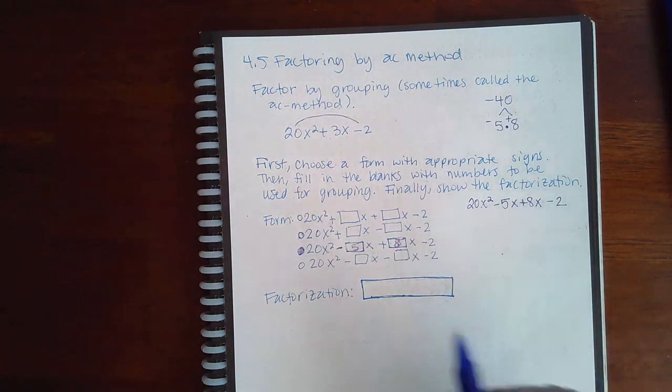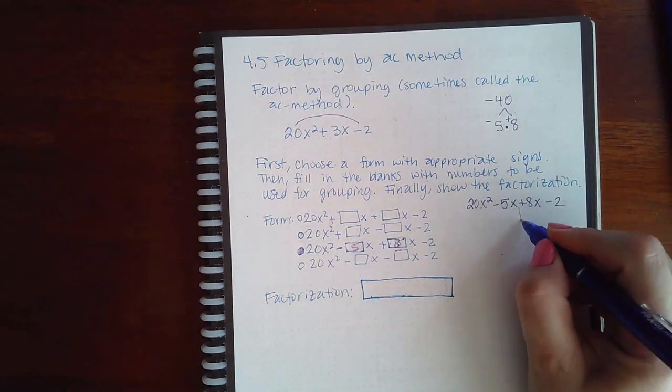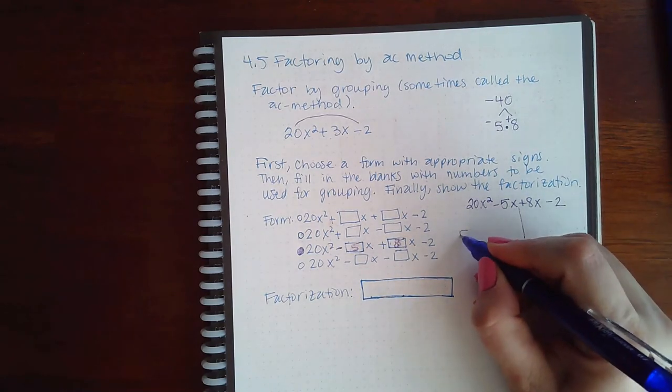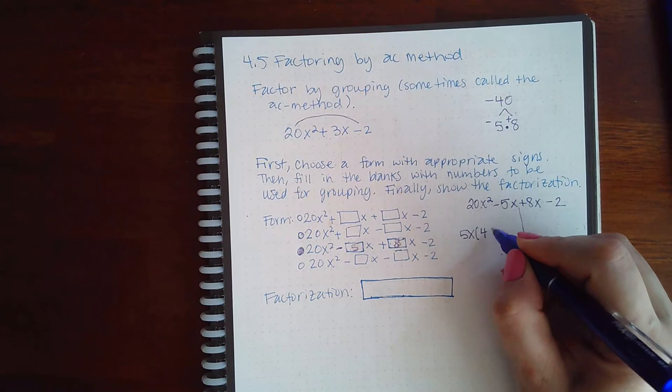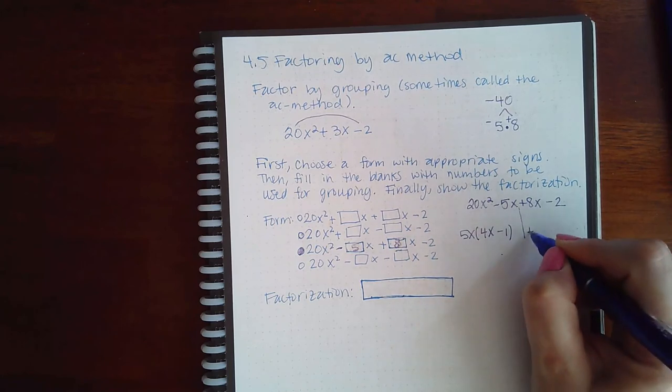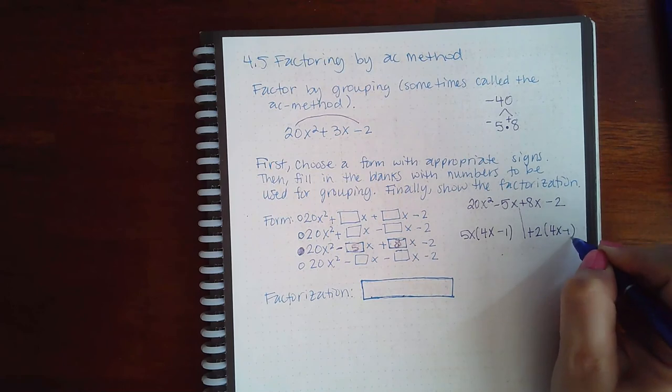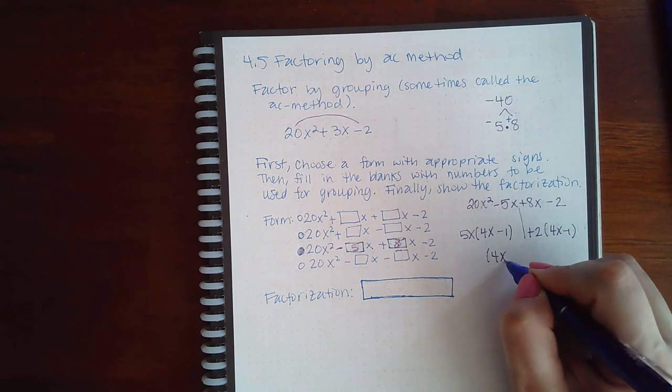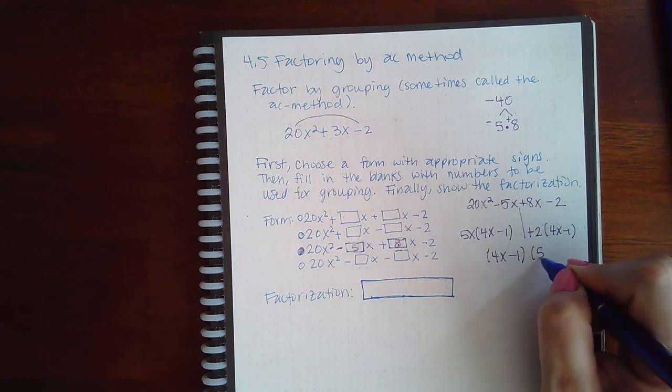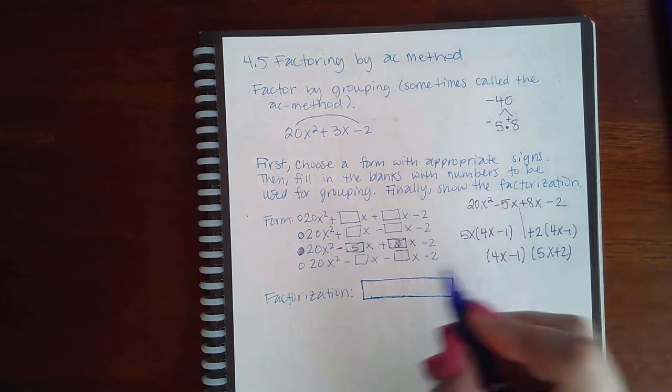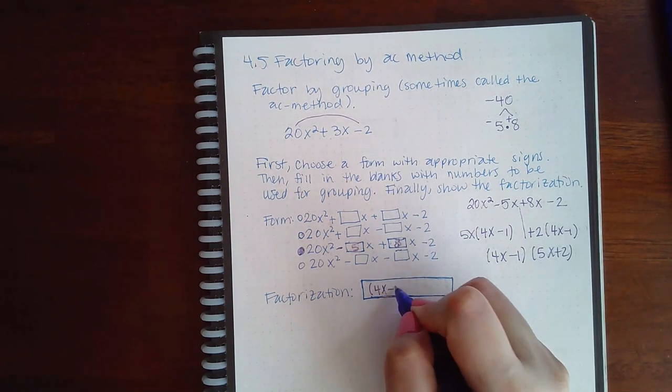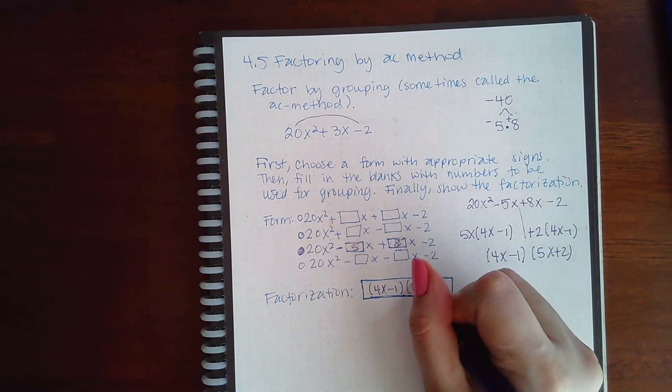For the factorization, we have to actually finish this out. I could factor out a 5x and I would get 4x minus 1. Bring down the plus sign, factor out a 2, I get 4x minus 1. Factor out the 4x minus 1, I get 5x plus 2.